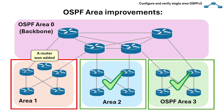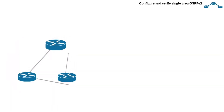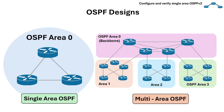The devices in other areas do not need to run the SPF algorithm when a new link is added in one area, which optimizes CPU usage. There are different OSPF network architecture designs, and these architectural choices affect factors like the size of the link state database, or LSDB, and the frequency of the SPF calculations.